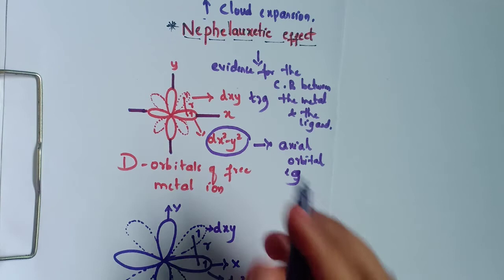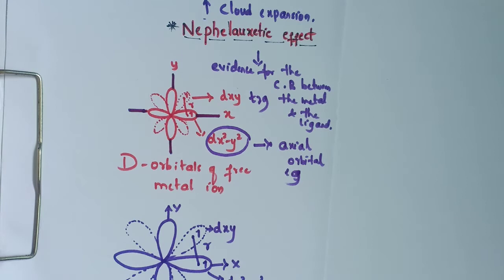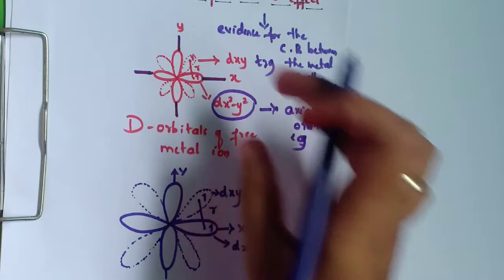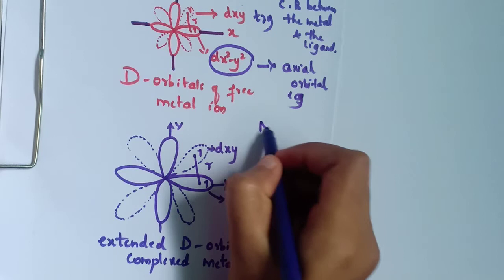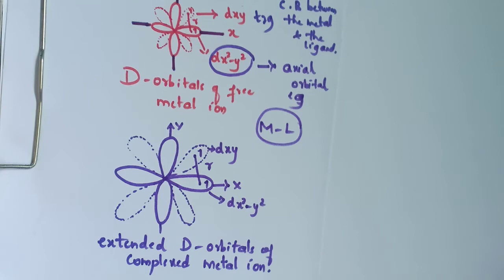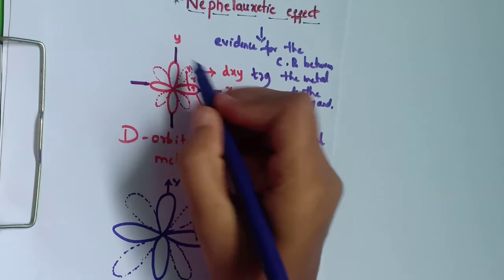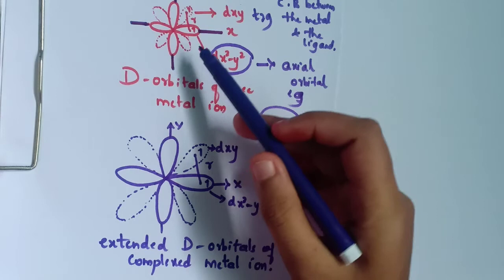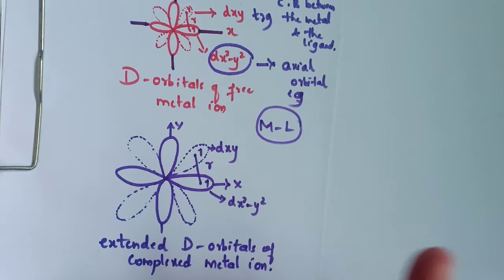The d-orbital of a free metal ion is small compared to the extended d-orbitals of a complex metal ion. Before the formation of a complex, the d-orbitals are very small, but after the metal and ligand approach to form a complex, the d-orbitals become extended.